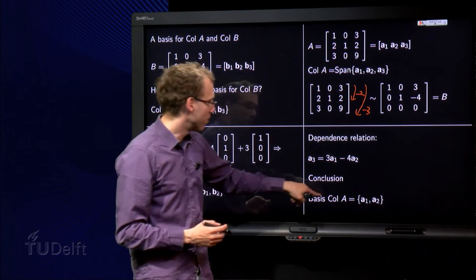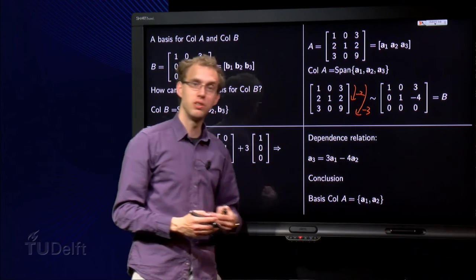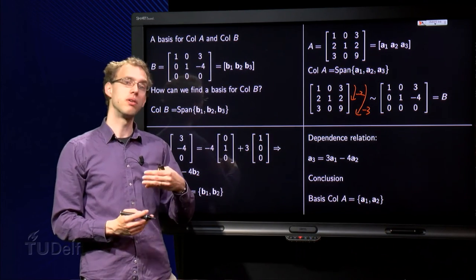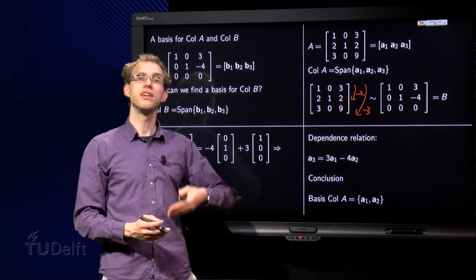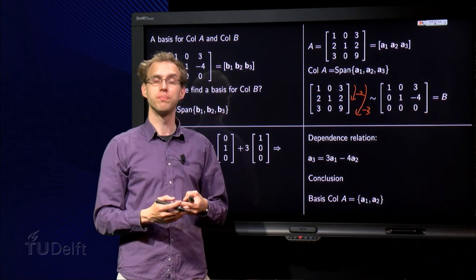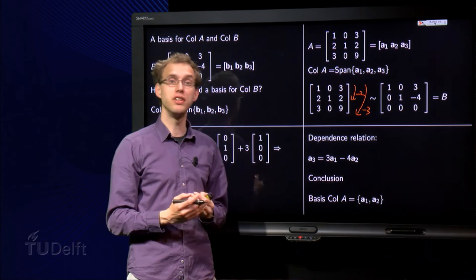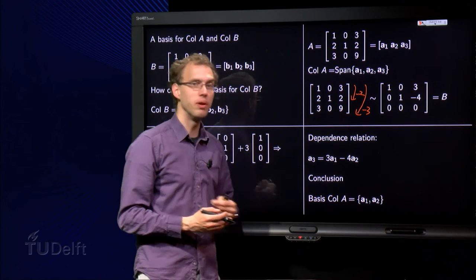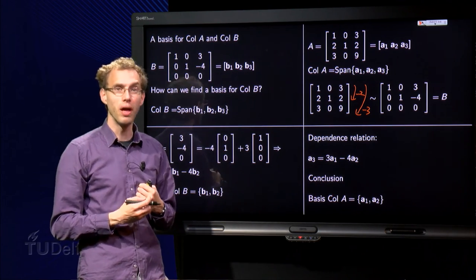So that means we can find the basis for col A as the set consisting of a₁ and a₂, because a₁ and a₂ are independent, and a₃ is a linear combination of a₁ and a₂. So that is how we can find a basis for col A.